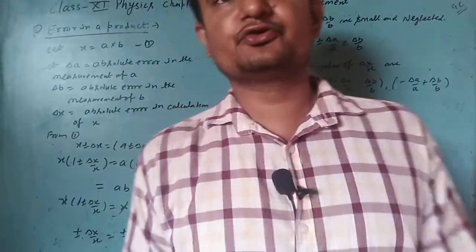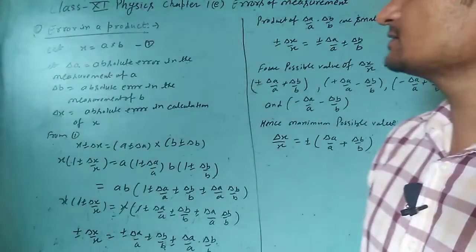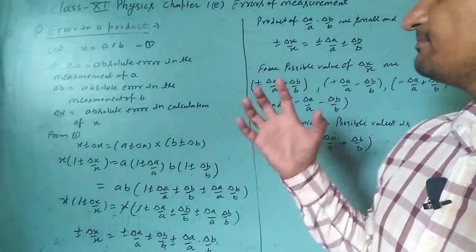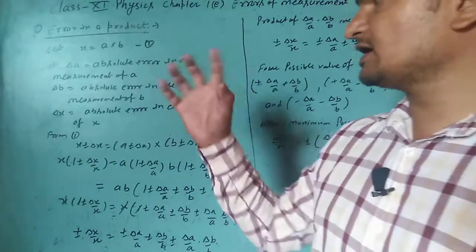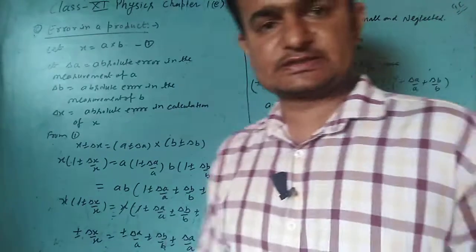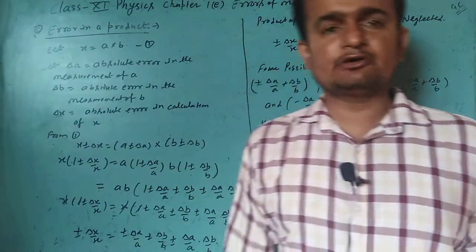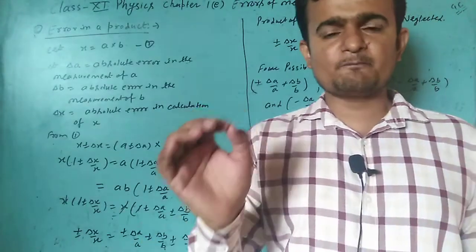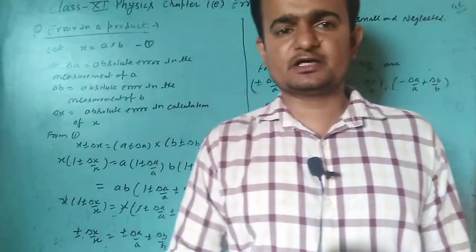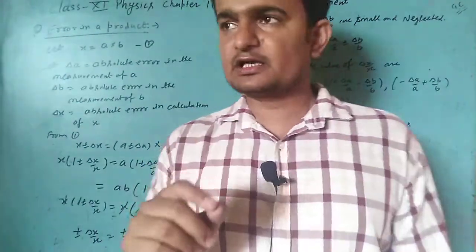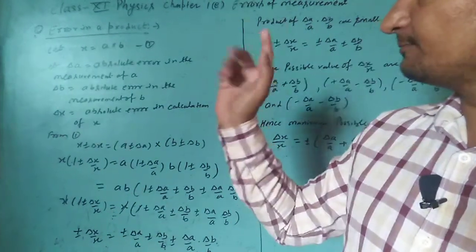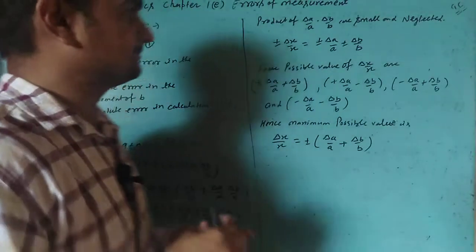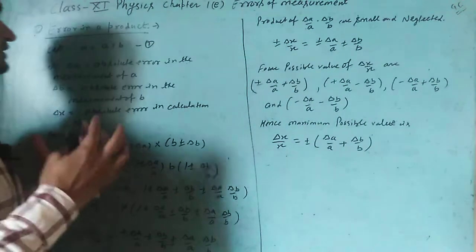Good morning. Today we'll discuss Chapter 1E, Error of Measurement, of Class 11 Physics. We will discuss Part C of the combination of errors — error in a product.